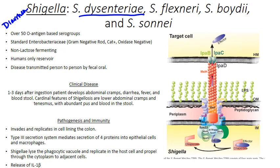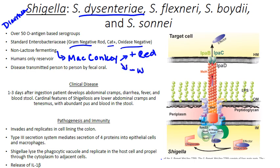Whenever you hear the term dysentery-like, you're thinking about blood, pus, and all of those things present in the stool. As an Enterobacteriaceae, it follows the same descriptive tests: it's a gram-negative rod, non-spore forming, catalase positive, oxidase negative. We can grow it on MacConkey agar, which pretty much only grows gram-negative organisms, and because it contains lactose you can see whether organisms can ferment it. If they ferment it, they turn the agar red. Shigella cannot ferment lactose, so it maintains that white translucent color.